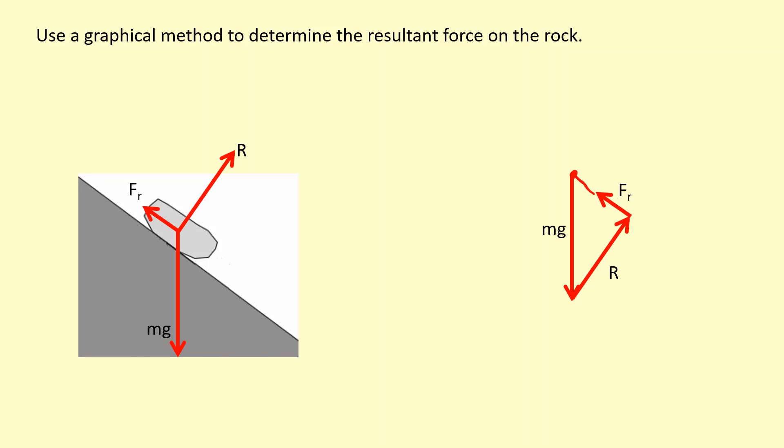The overall effect, the resultant force here, is going to be from starting from here going this way. So there is a resultant force, it's going to be down the slope and that's going to cause the object to accelerate down the slope.